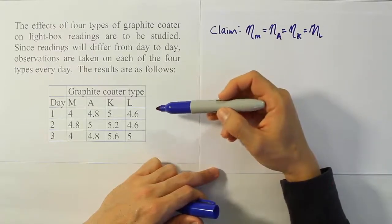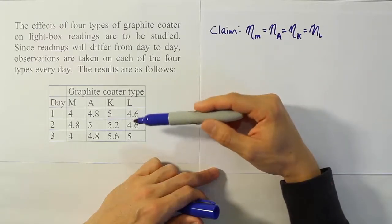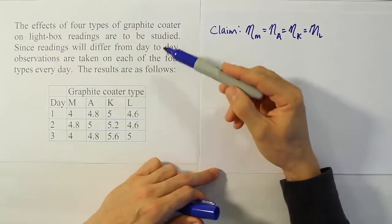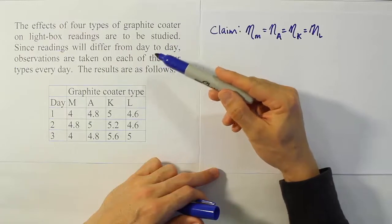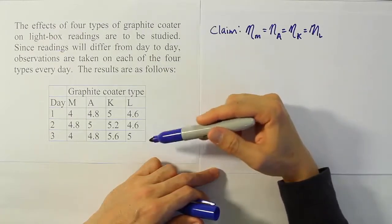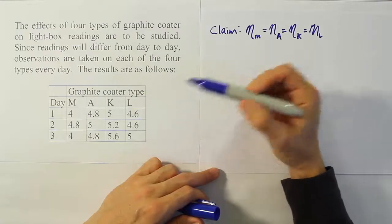Now, they're asking about graphite coater types. We could run a test to see if the blocks, in other words, the days are different, but obviously they don't care because they say here that they know that the readings will differ from day to day, so they're not interested in that. They're aware that that's the case, so they use those as the blocks just to block out those differences.